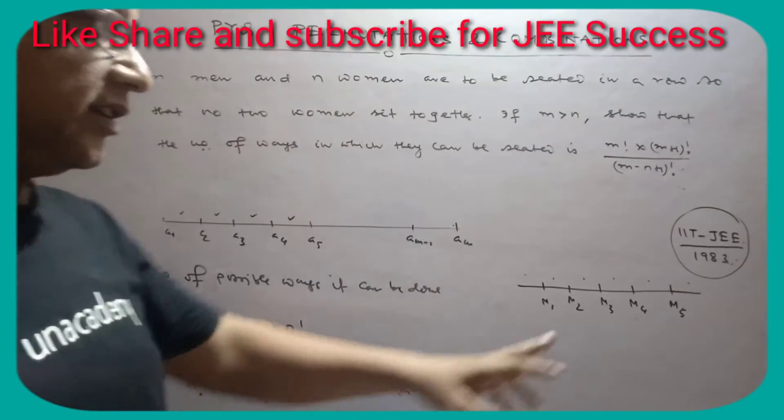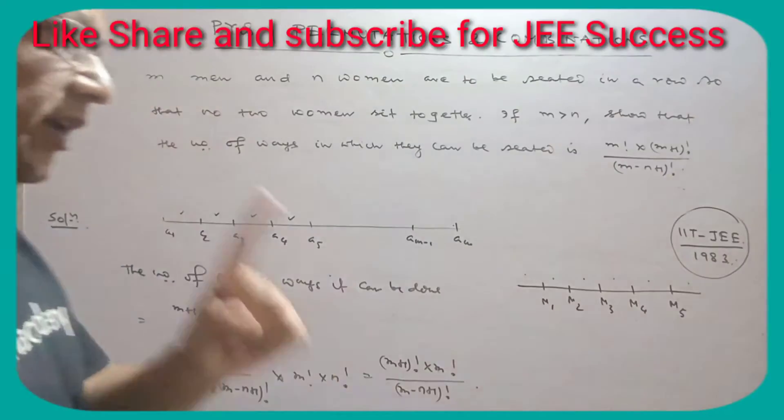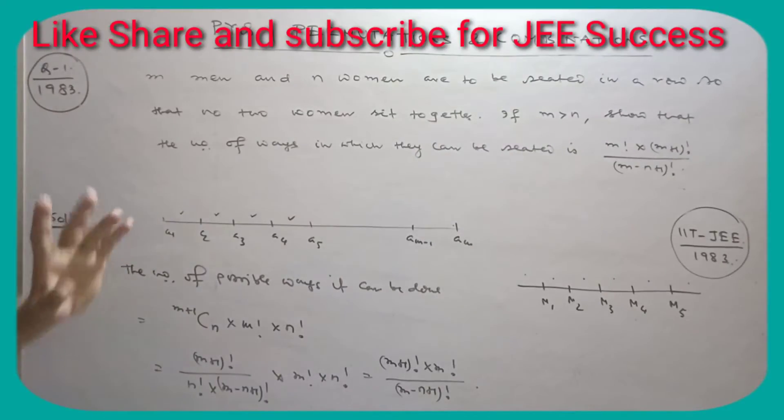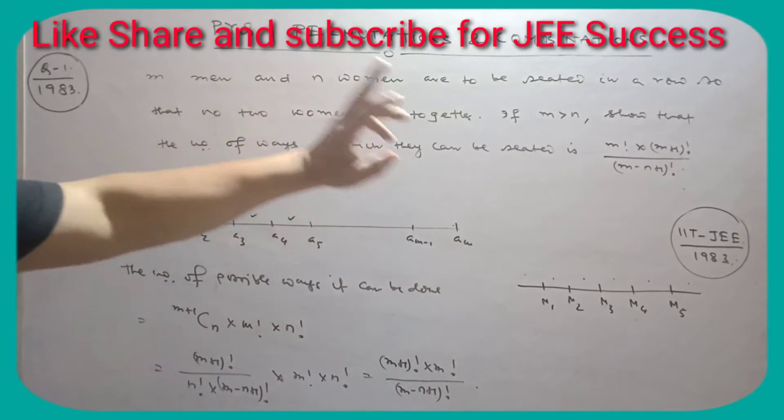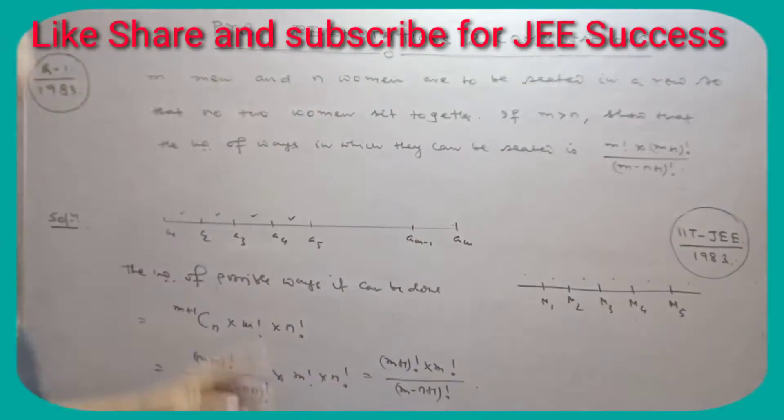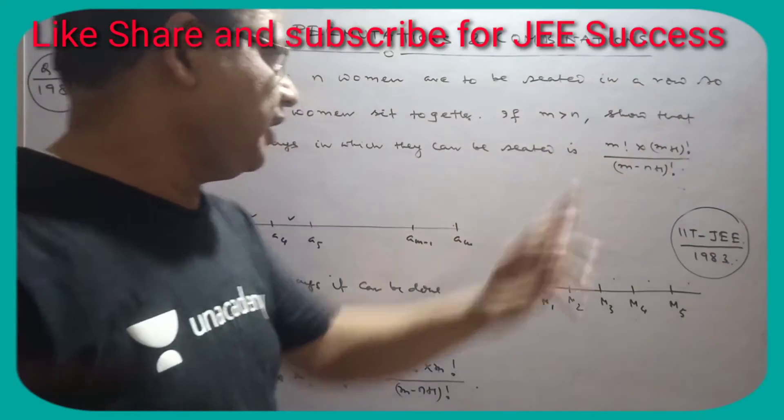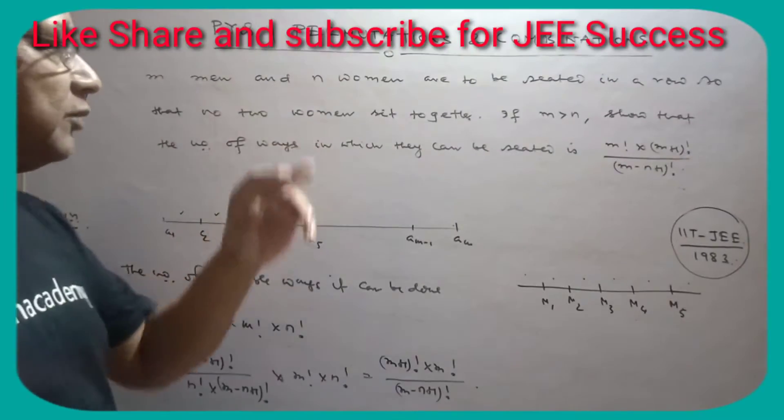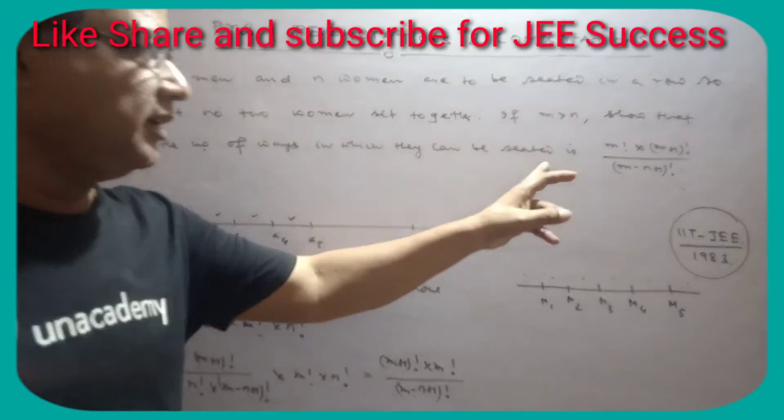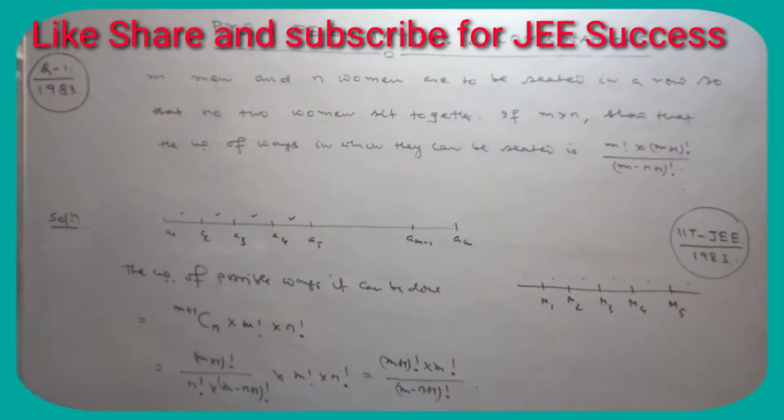This is a PYQ from 1983 on permutations and combinations. The question asks: N men and N women are to be seated in a row so that no two women sit together. If M is greater than N, the number of ways in which they can be seated is this.